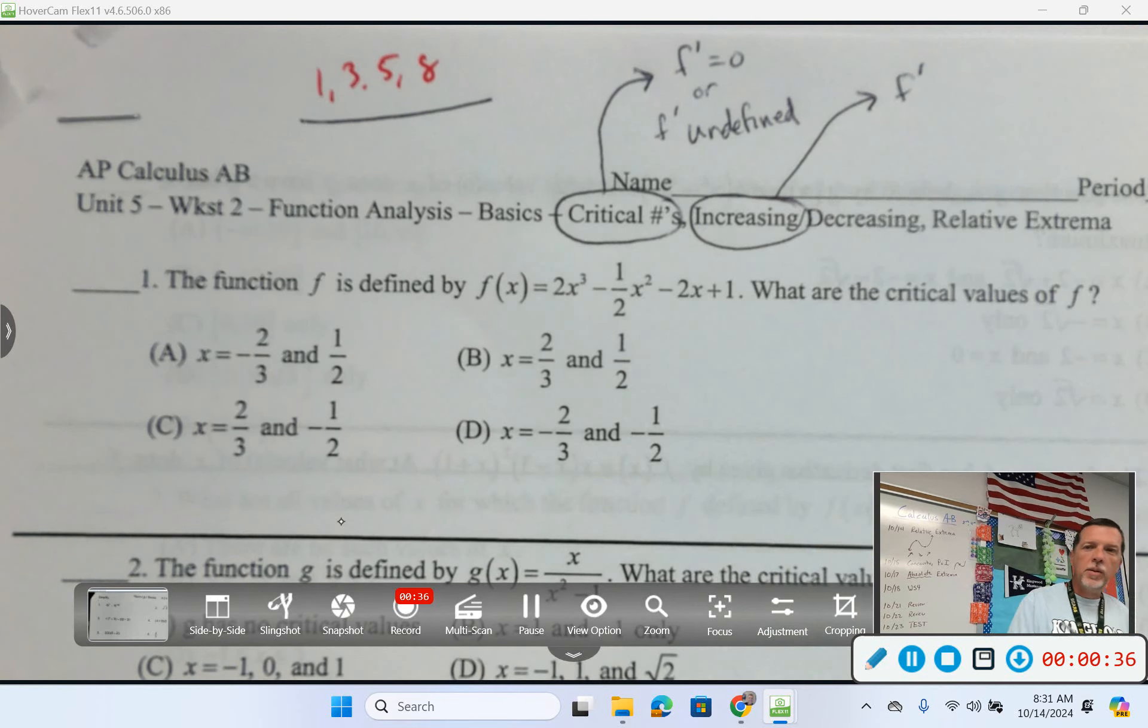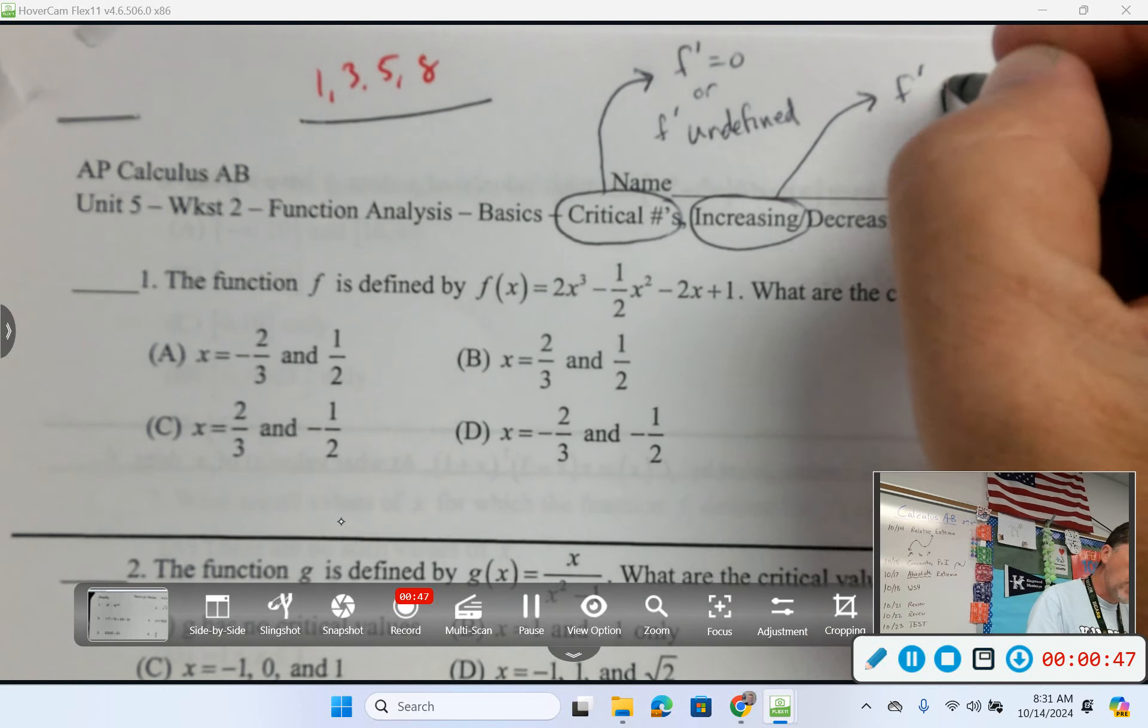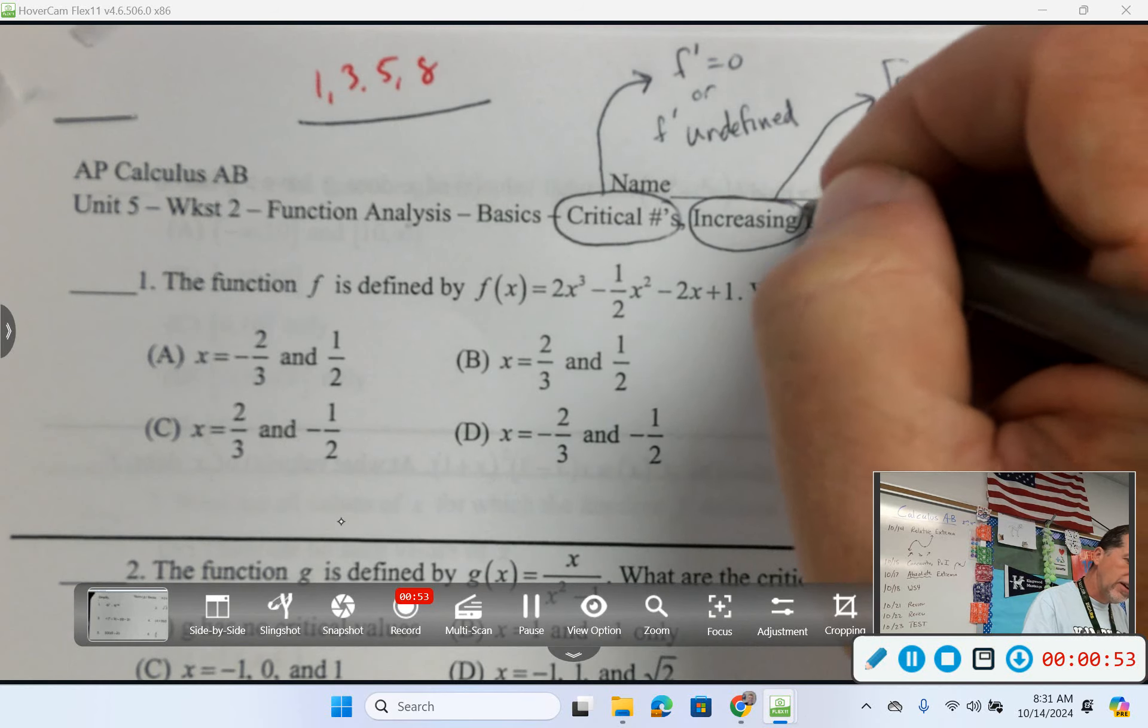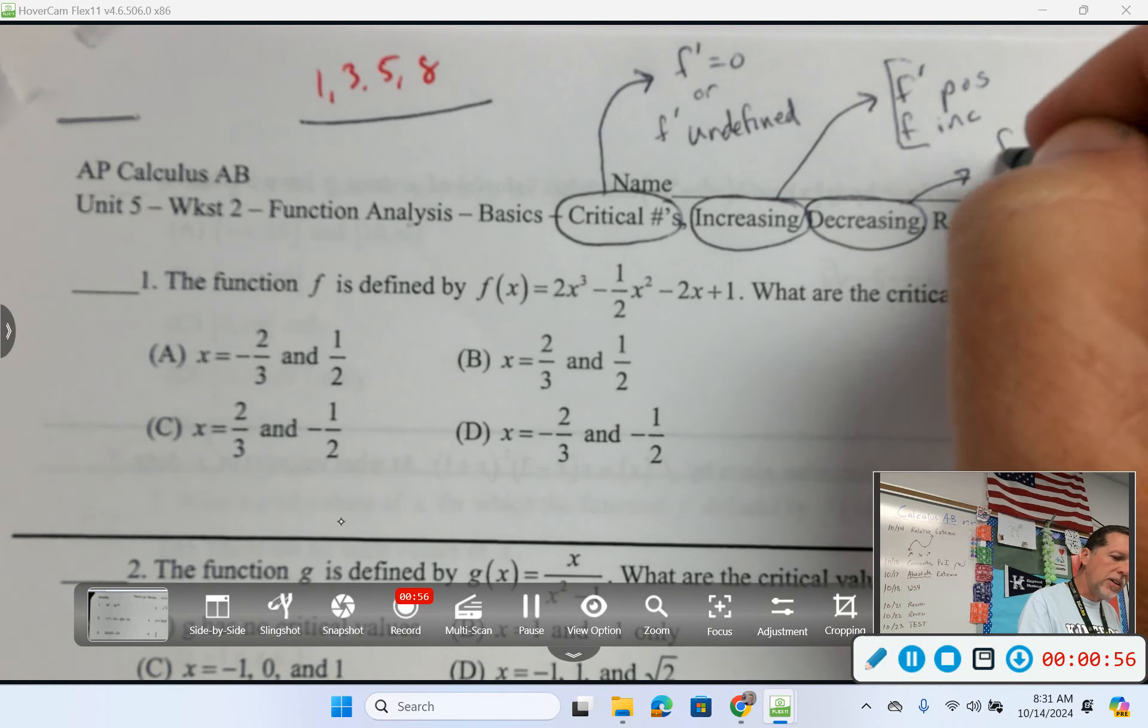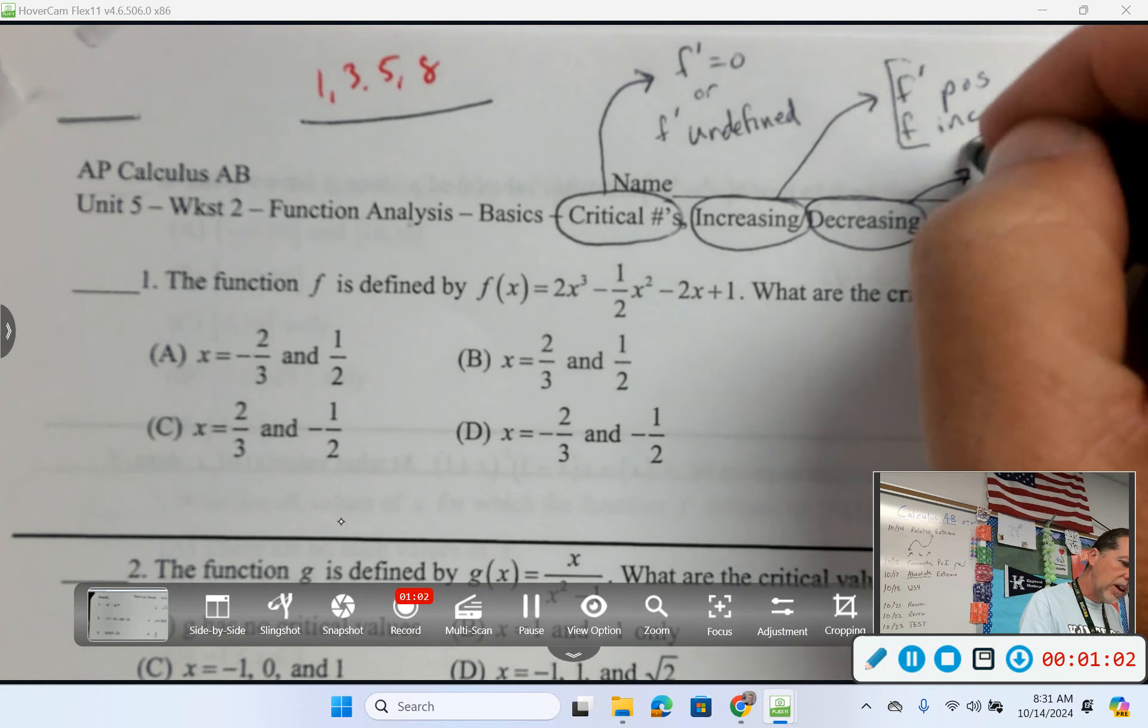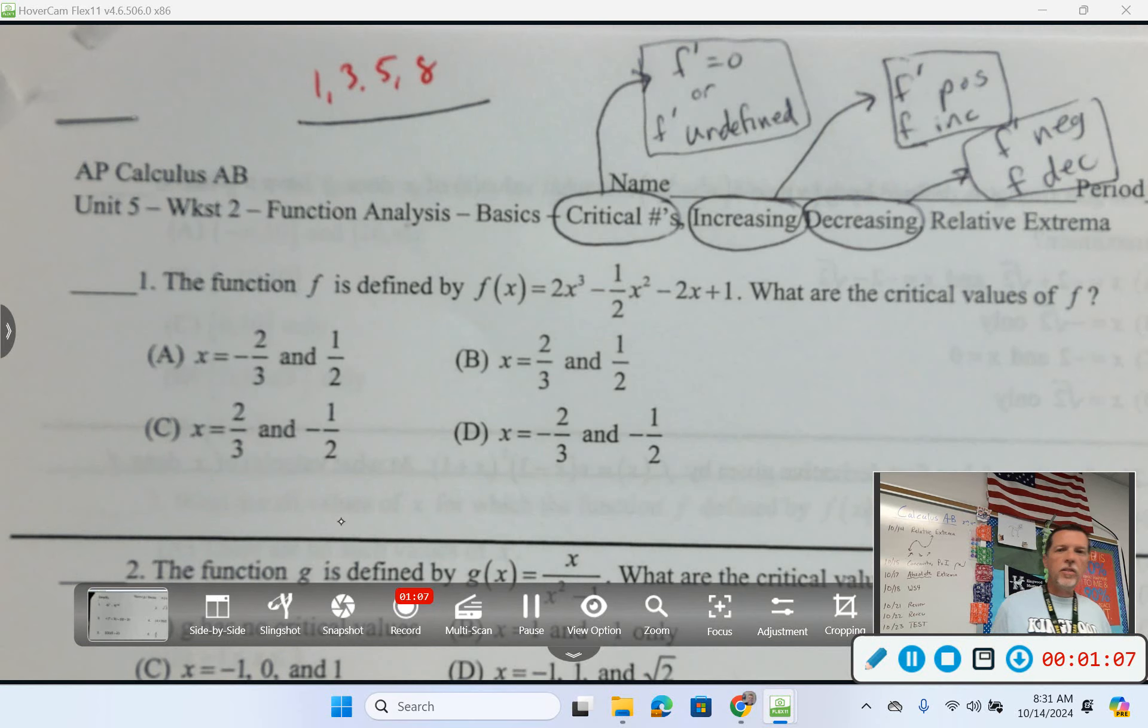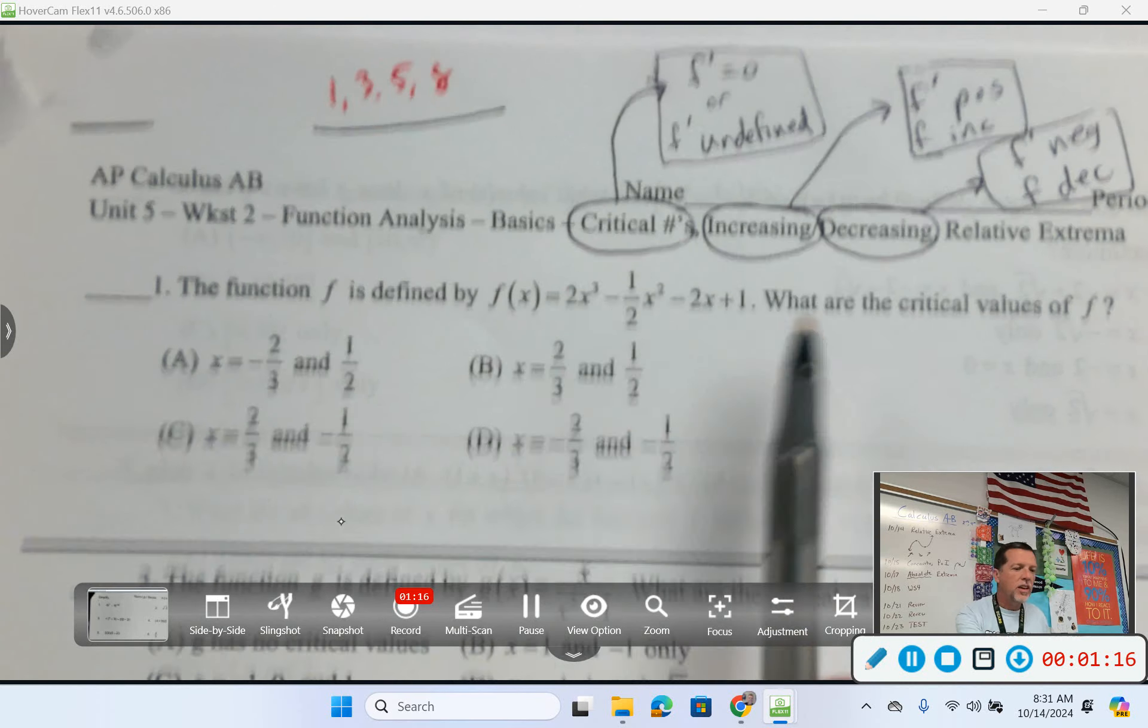Increasing, that would be where F prime is, what would F prime need to be for a function to be increasing? F prime is the slope, so if F prime is positive, then F is increasing, like those two things go together. Decreasing would be just the opposite. If F prime is negative, that means the function is decreasing. So that's basically the notes from Friday.